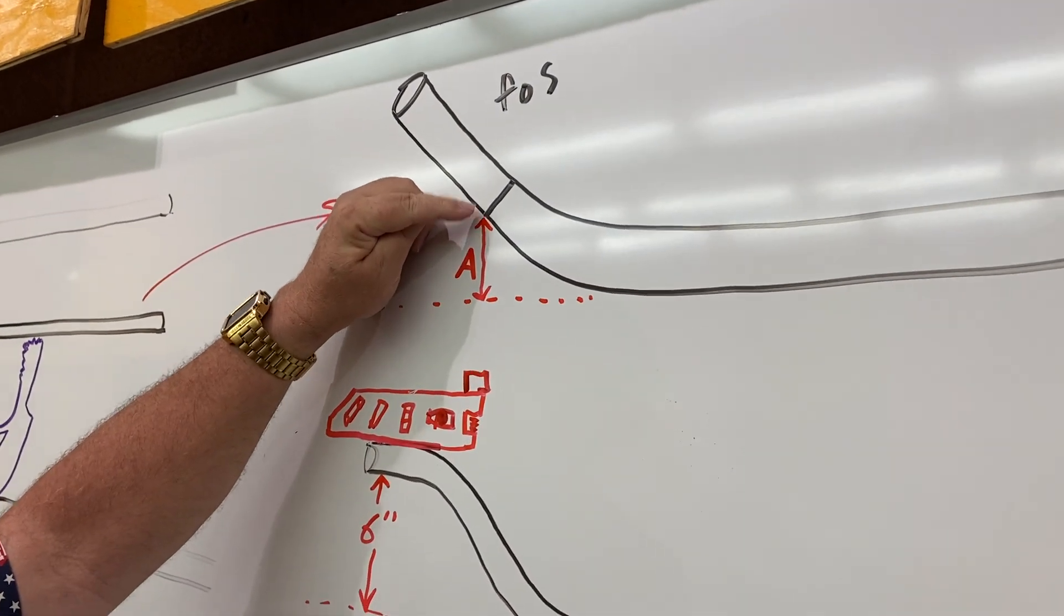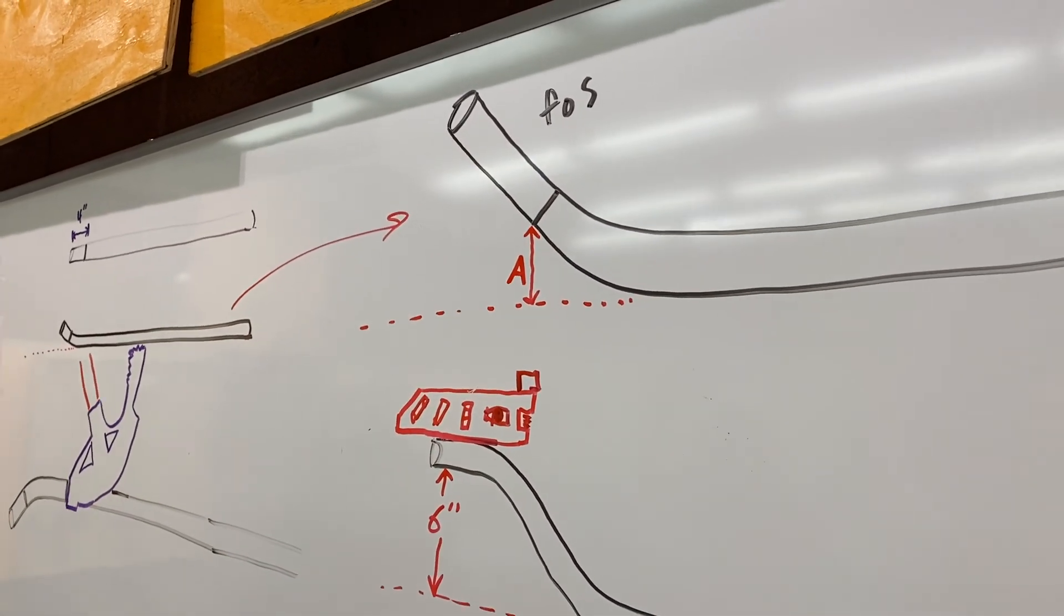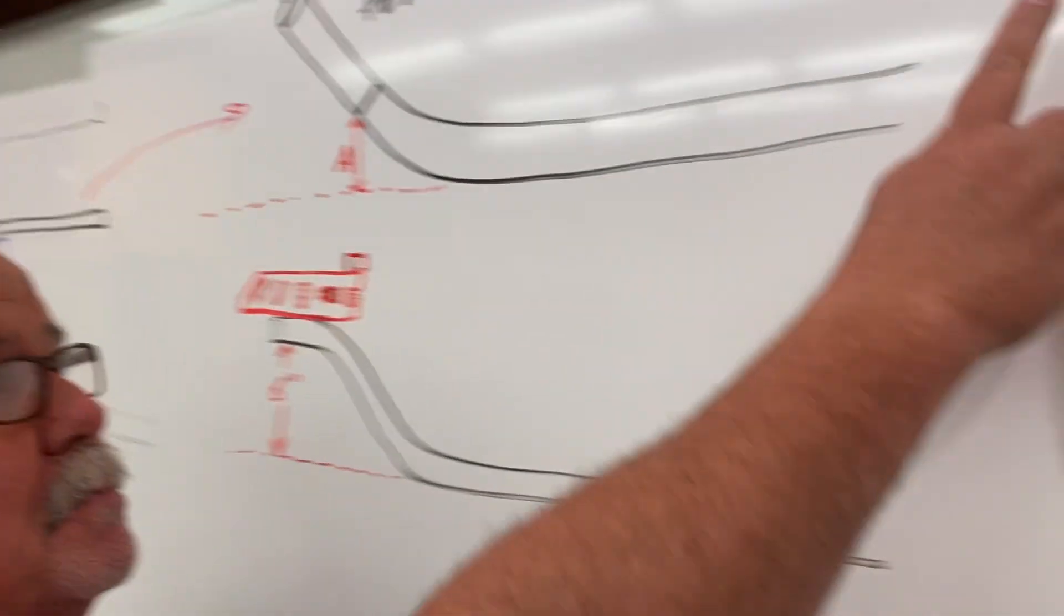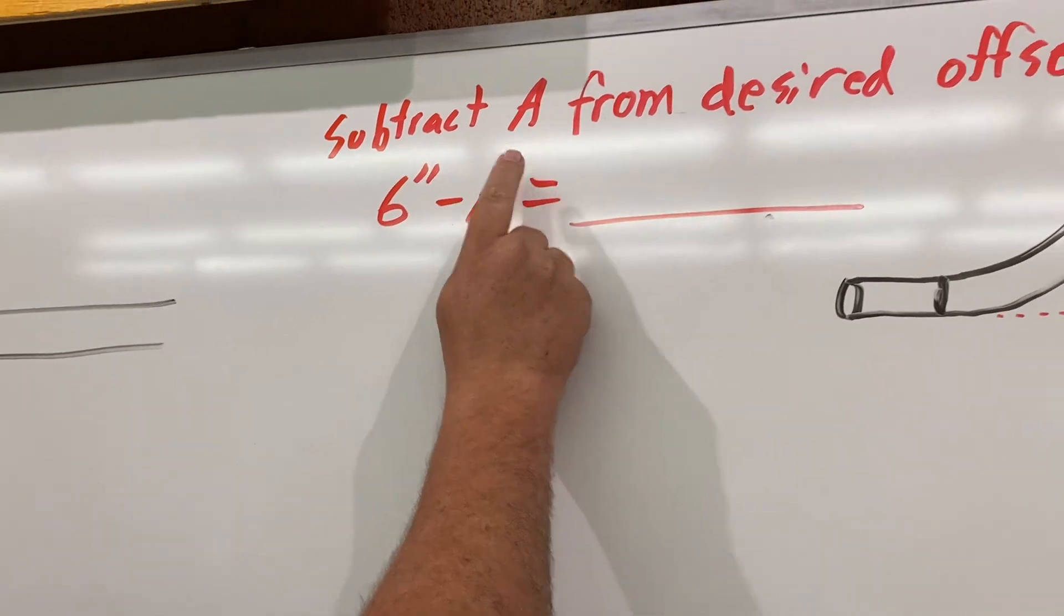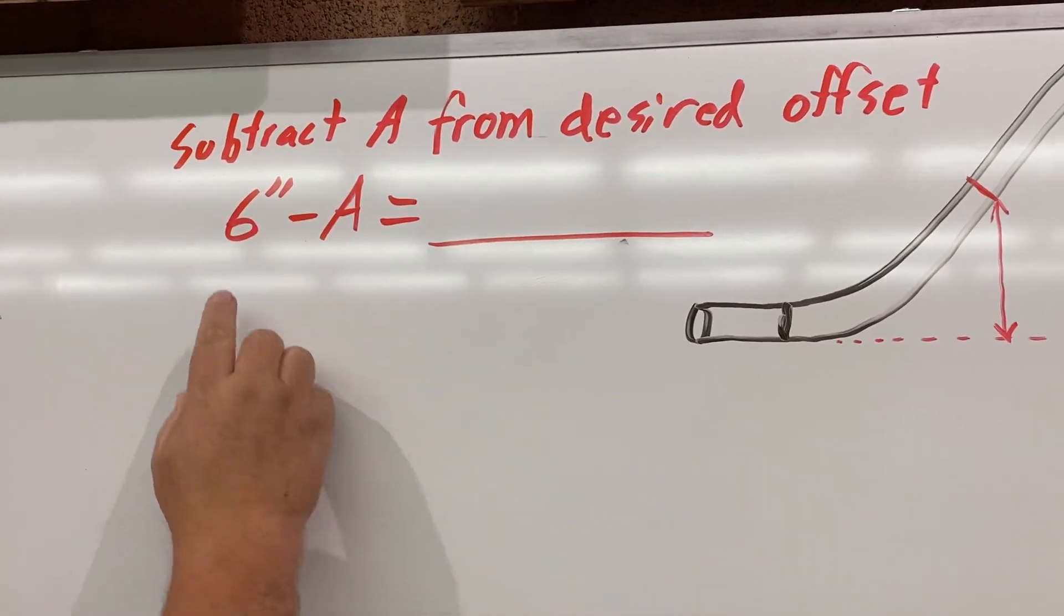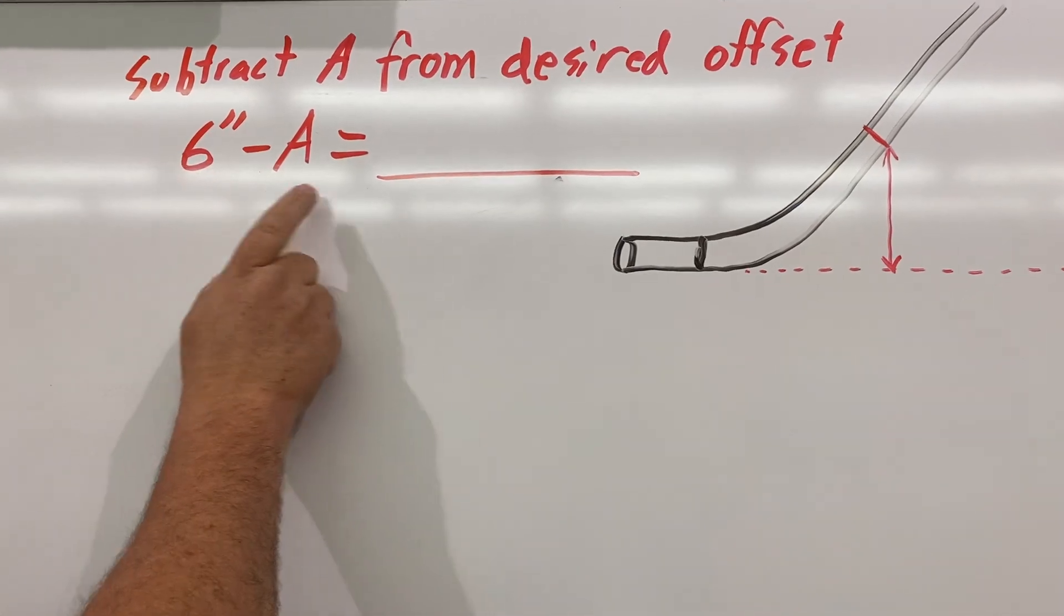This is front of shoe, not full of anything. And then I'm going to subtract this amount that is A from the desired offset. In this case, it's going to be a six inch offset, so I'm going to subtract A from six inches. I'm going to write the value down.